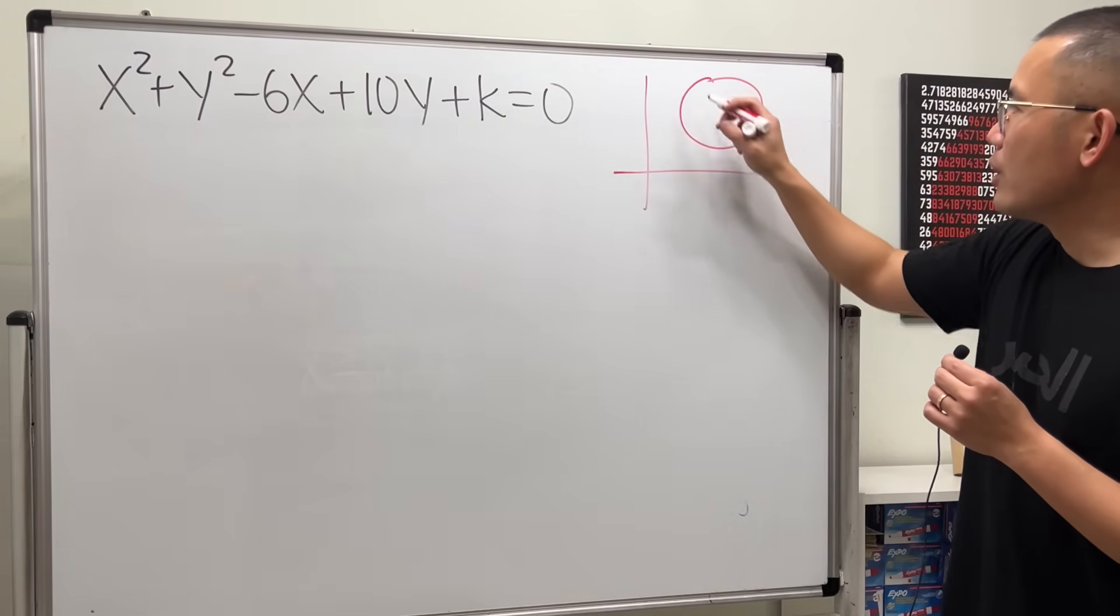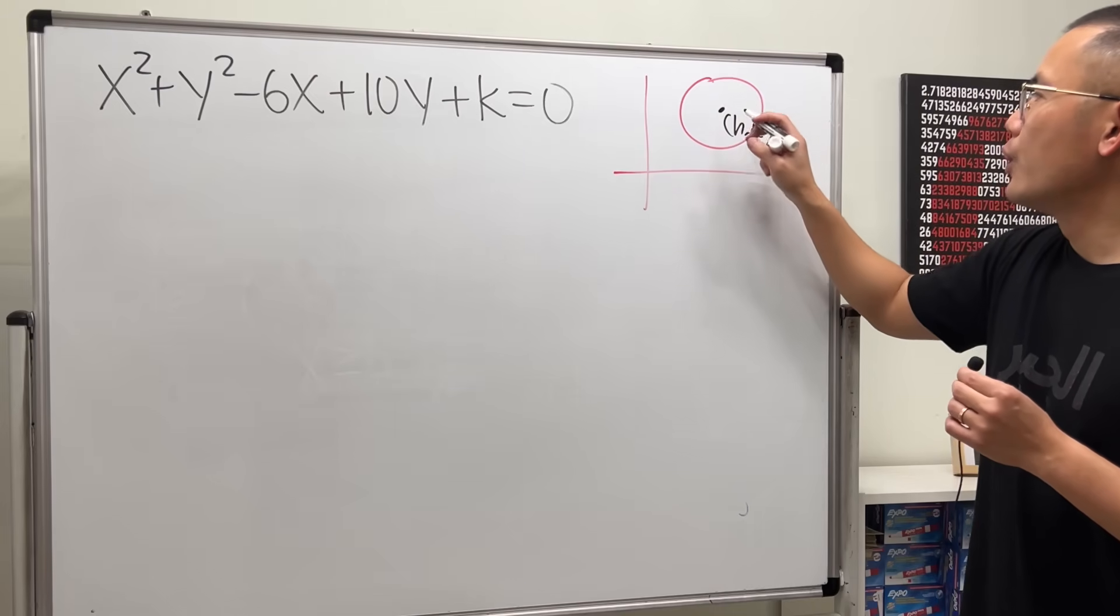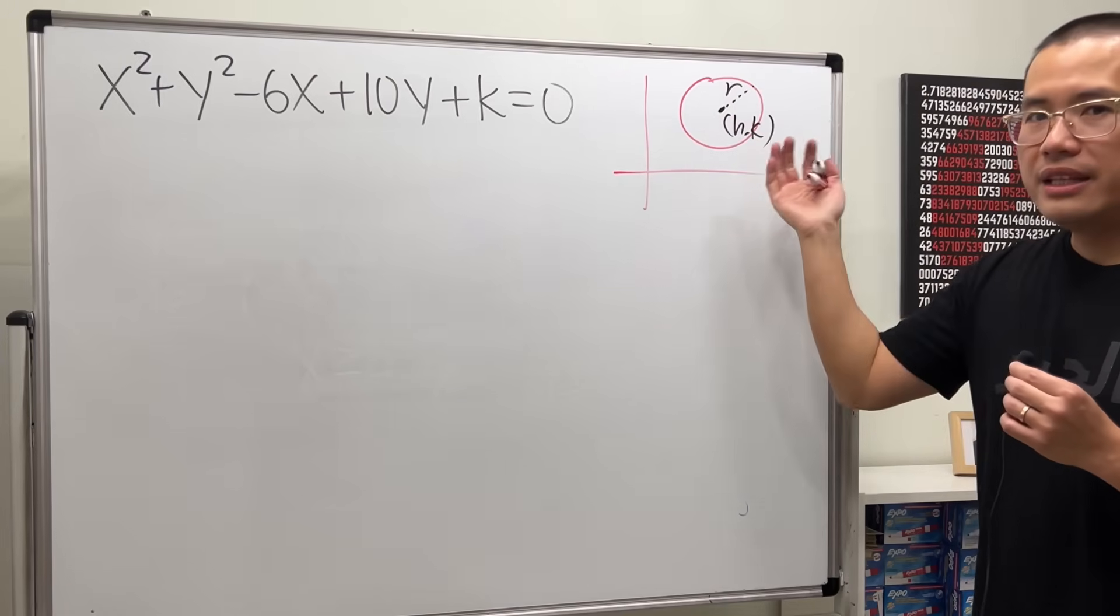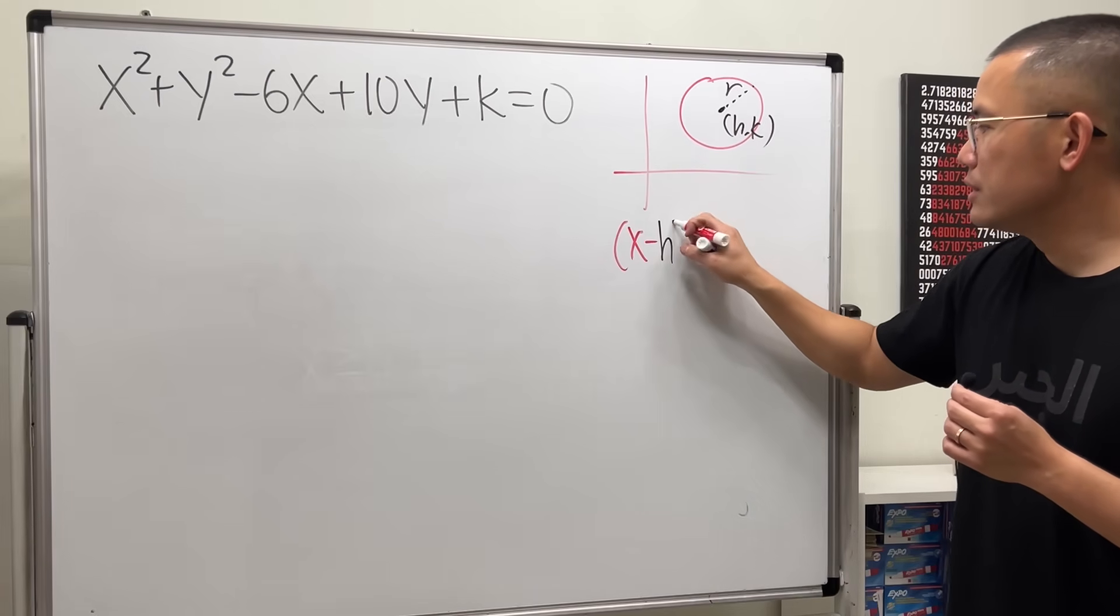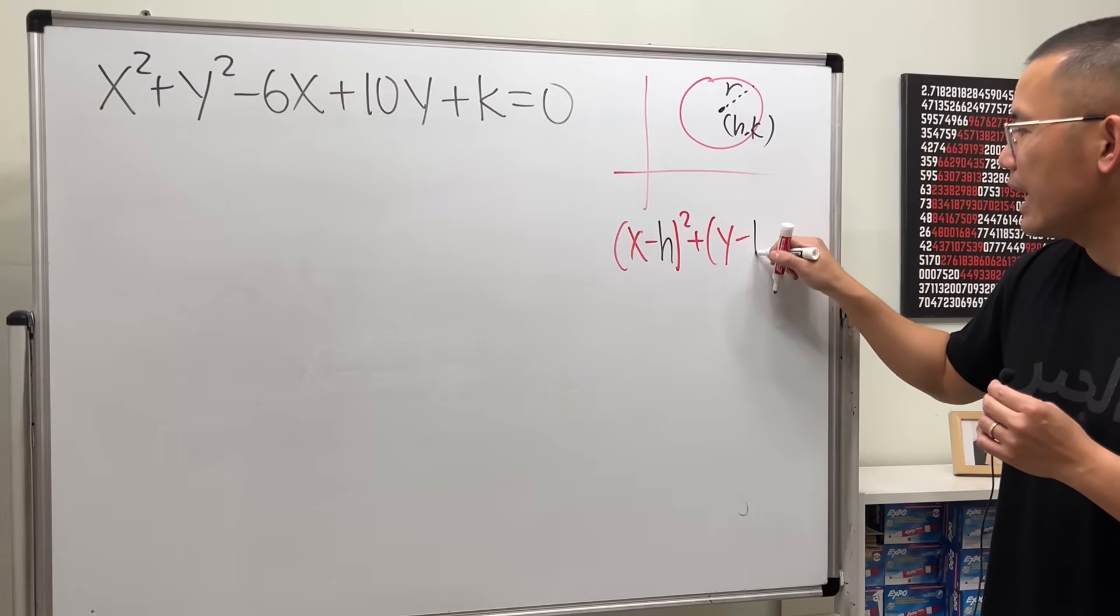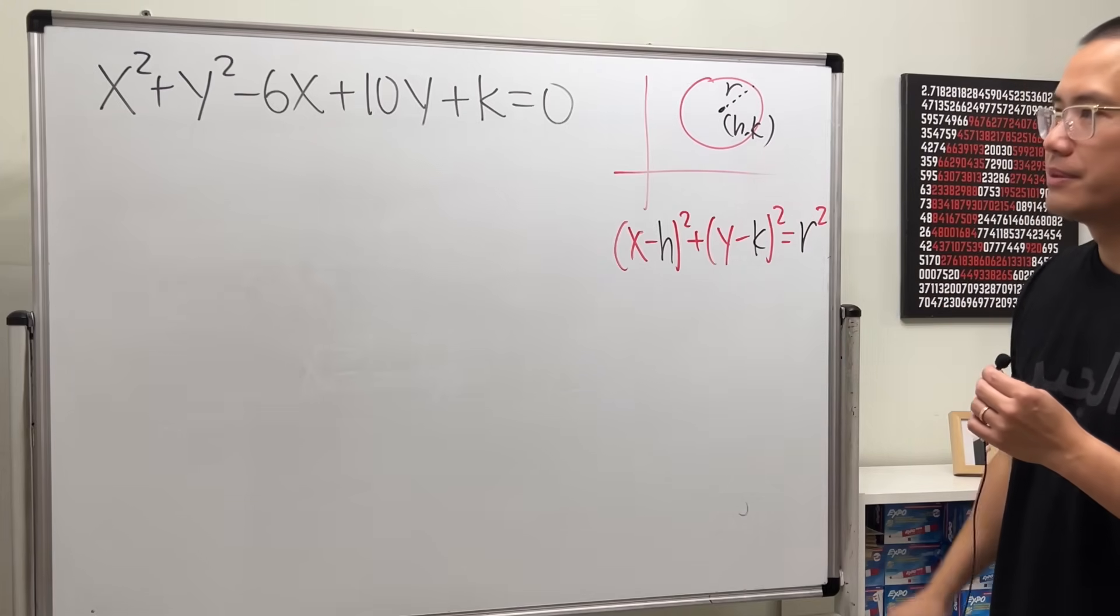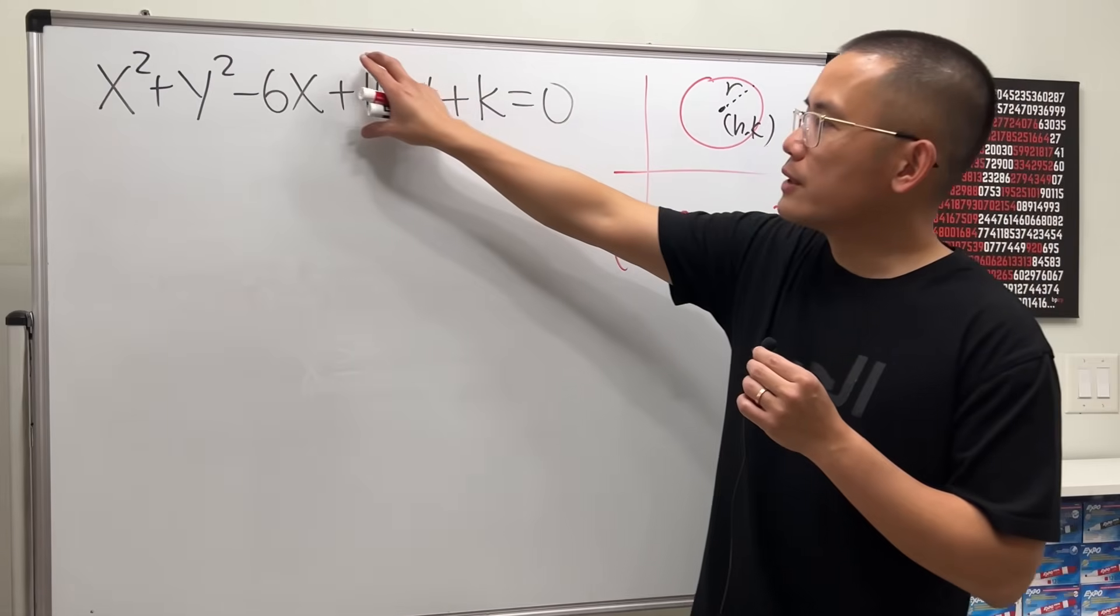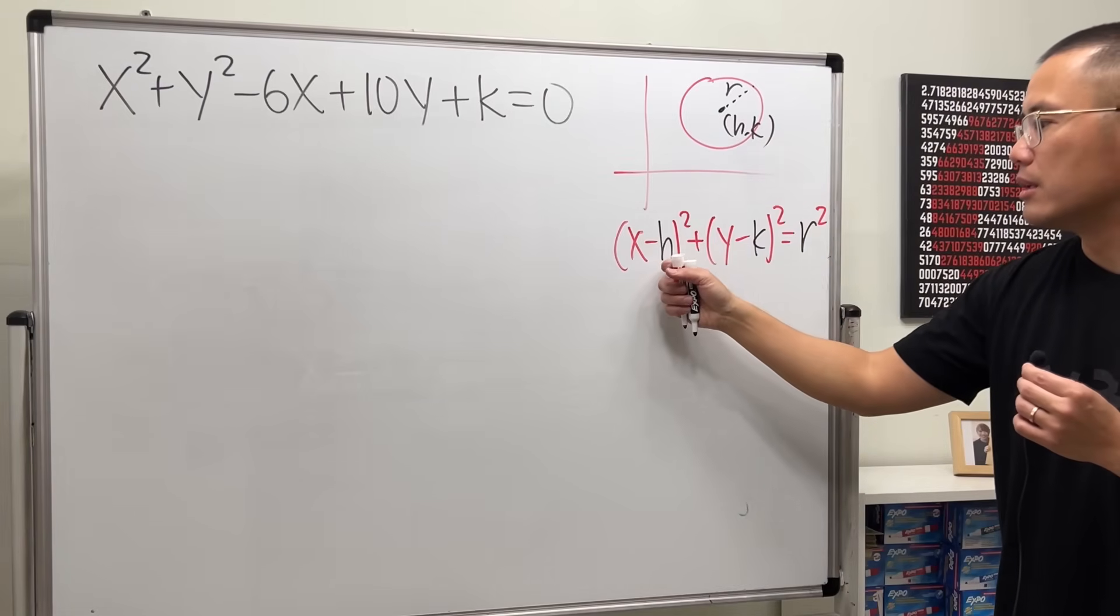If we have a circle centered at h, k with radius r, then it has a general equation x minus h squared plus y minus k squared equals r squared. So our first goal is to put this into this form so we can see the center h and k.